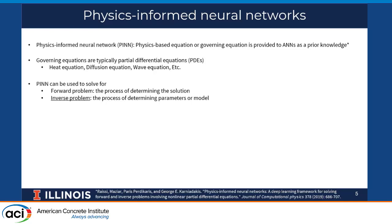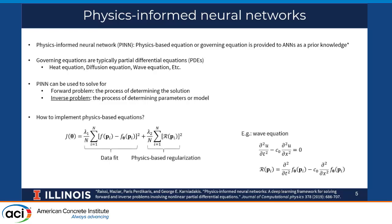PINNs can be used in two ways: the forward problem, which solves the PDE using initial and boundary conditions, and the inverse problem, which predicts the coefficients or forcing term of the PDE. This presentation focuses on the inverse problem. Physics-based equations are incorporated by modifying the cost function. The first term is the mean squared error, also called the data fidelity term, and the second newly added term is the residual term or physics-based regularization, whose details depend on the governing equation embedded — in this case, the wave equation.